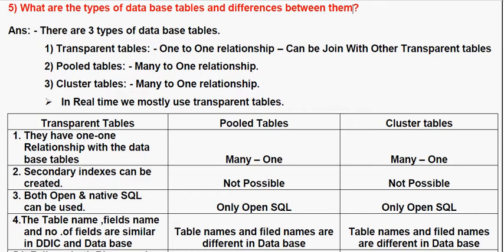The transparent table has a one-to-one relationship and can be joined with other transparent tables. The pool table has a many-to-one relationship, and the cluster table also has a many-to-one relationship. In real time, we mostly use the transparent table.